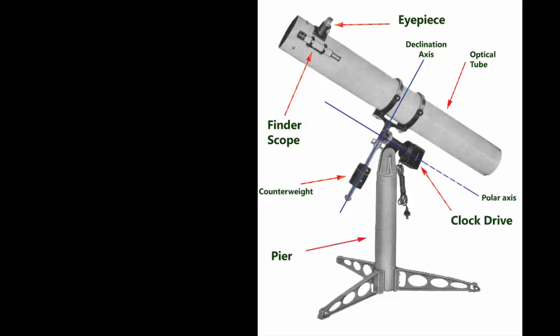You can see in this diagram that there are two axes, the blue lines at right angles to each other. One is the polar axis that points up towards the north celestial pole, towards the North Star, Polaris.